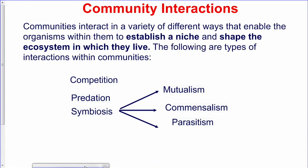In ecological interactions, we are going to look at the feeding relationships that occur in an ecosystem. One of these feeding relationships is competition. We also talk about predation and symbiosis. Symbiosis is divided into three: mutualism, commensalism, and parasitism. These are feeding relationships that take place in community interaction.